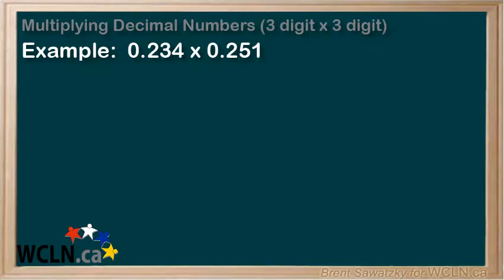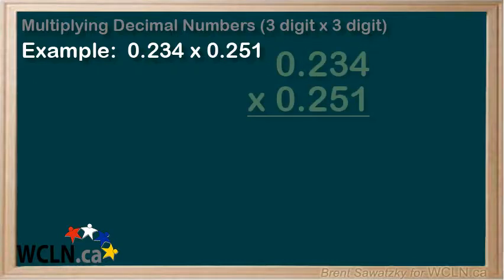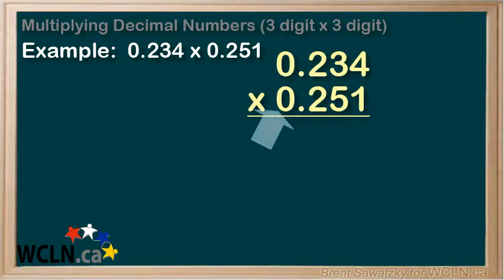Example: 0.234 times 0.251. Let's line it up like this. Recall that the zeros out front here are just to highlight the decimals. We'll start with the one on the bottom here. We recall that one times any number is just the number itself, so we can just write down 234 right here.